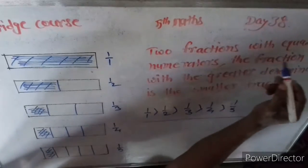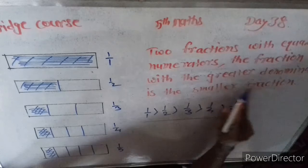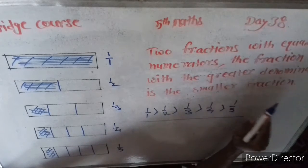The fraction with the greater denominator is the smaller fraction.